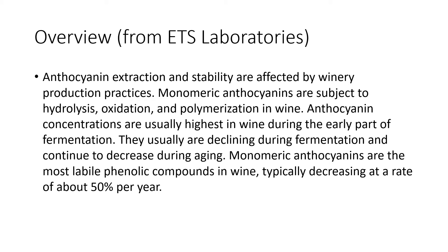Anthocyanin concentrations are highest — at least for monomers — early in fermentation, and then they decline during fermentation and aging because those anthocyanins get stuck to things. The monomeric amount goes down, but the total amount doesn't drop off precipitously — it becomes a polymeric form. The monomeric anthocyanins decrease at a rate of about 50% a year, which is a lot, and there's a reason you see that color modification as wines age. We see things go from a more pure bright red toward a bricking color, with lower levels of pigmentation and less opacity.